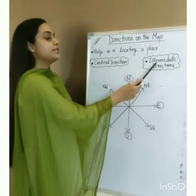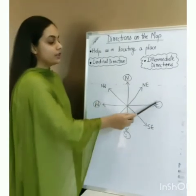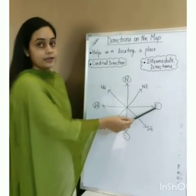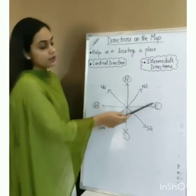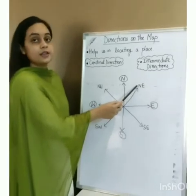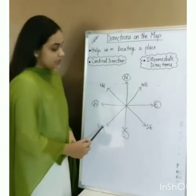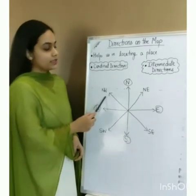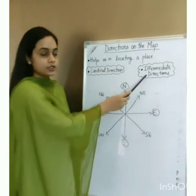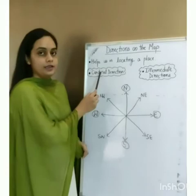The other type is intermediate directions. Intermediate directions lie between the cardinal directions. North and East are cardinal directions, and the direction lying between them is North East — so North East is an intermediate direction. Similarly, South East, South West, and North West are intermediate directions, while North, South, East, and West are cardinal directions.